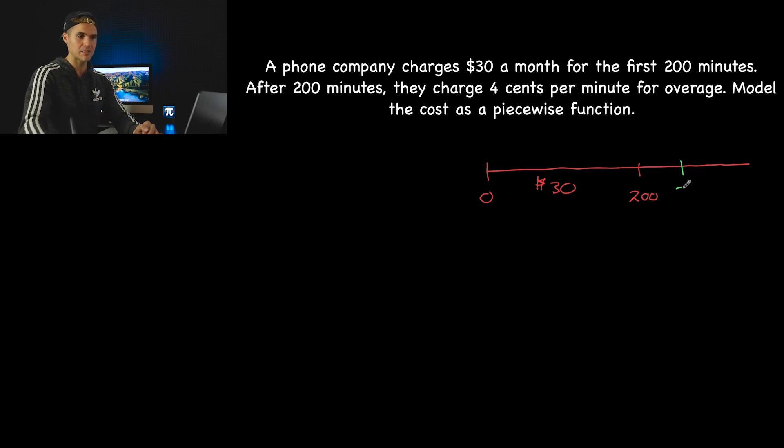So what that means is let's say we talk 201 minutes. What would be the cost? Well, the cost is going to be the flat fee of $30 plus for that one minute of overage, 201 minus 200 is one. For that one minute of overage, you're going to get charged $0.04. And so your total charge, if you're going to talk 201 minutes, is going to be $30.04.